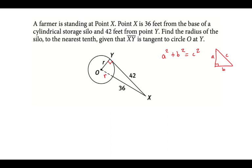In this case, our legs are r and the 42. And our hypotenuse is r plus 36.